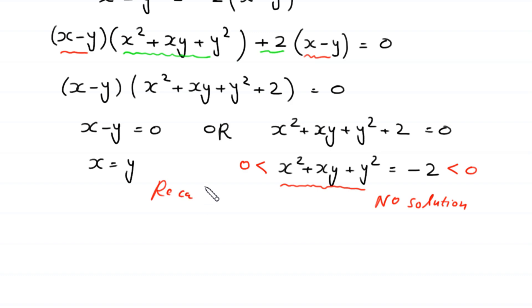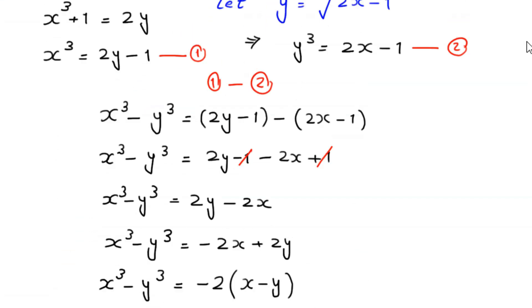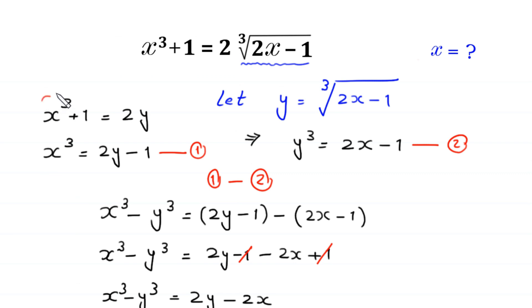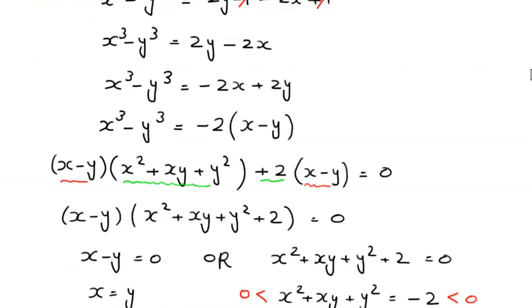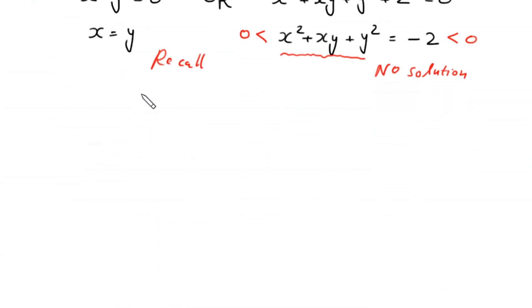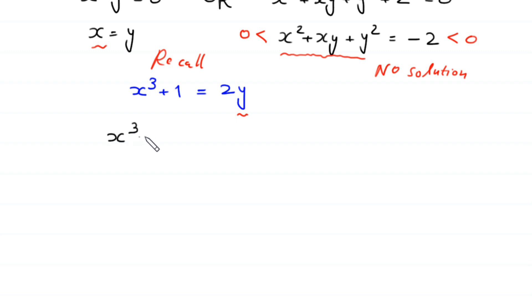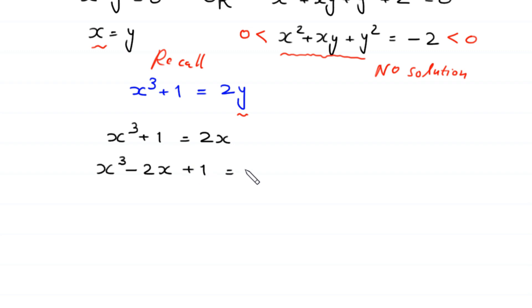Now, recalling equation 1: x cubed plus 1 equals 2y. Since x equals y, we replace y with x. Then this equation becomes x cubed plus 1 equals 2x. Moving 2x to the left side gives x cubed minus 2x plus 1 equals 0.